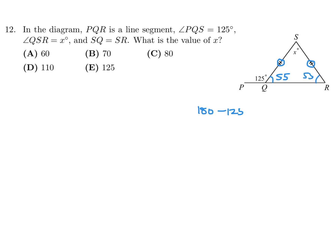All the angles of a triangle add up to 180. So x plus 110 equals 180, and therefore x equals 70. Number 12 is B.